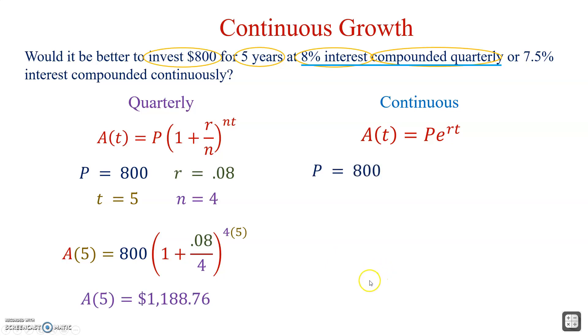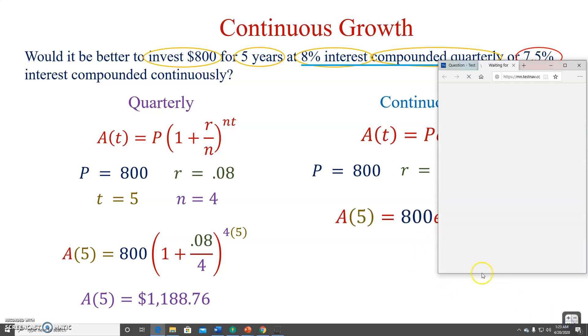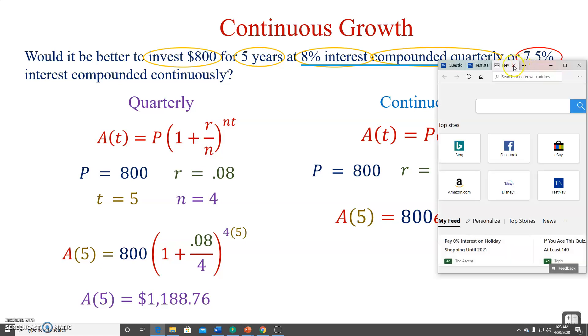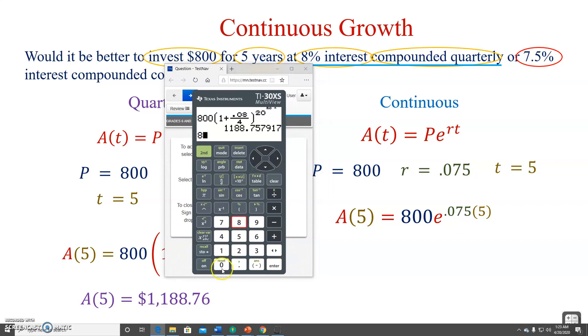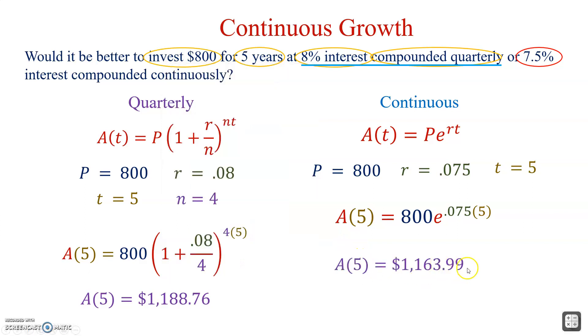Now, when I look at it continuously, there's the 800 still. The rate is 0.075, because now it's continuous. And the time is still 5 years. We simply substitute this into the formula. We're going to take 800. And we have a button, there's the E to the X. 0.075 times 5. Here we get $1,163.99. $1,163.99.